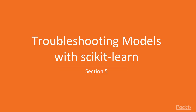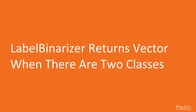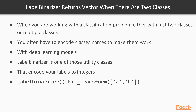Hello, and welcome to section five. Here we'll be working with troubleshooting models with scikit-learn, starting with solving a problem when LabelBinarizer returns a vector when there are two classes. When working with a classification problem, you have to encode the class names as some kind of values to make them work with deep learning models. LabelBinarizer is one of those utility classes from scikit-learn that helps you do that.